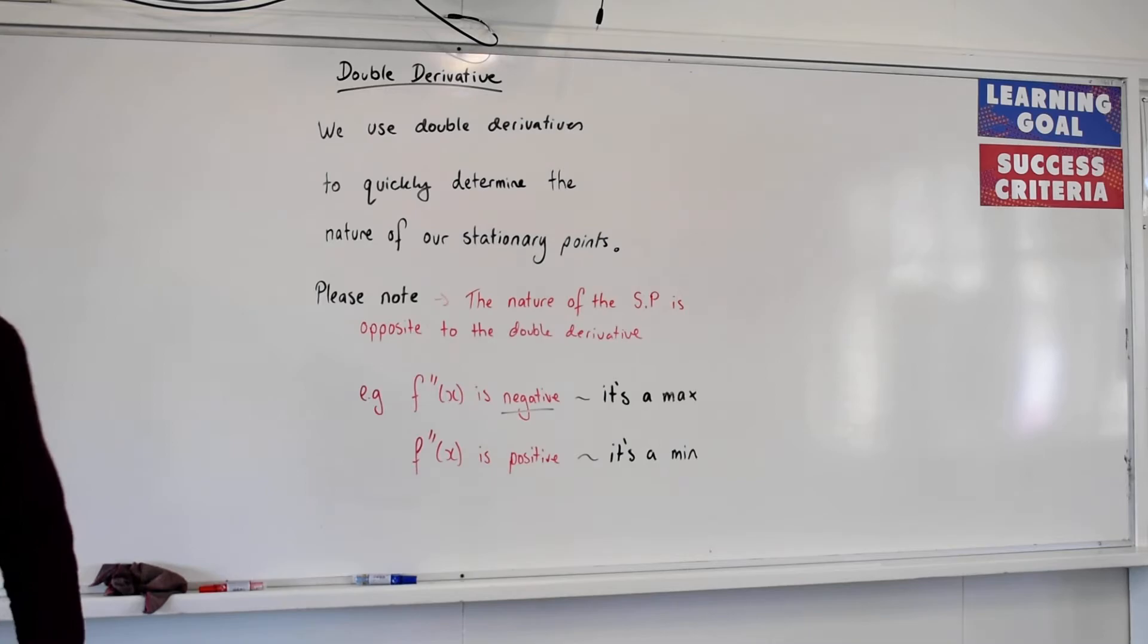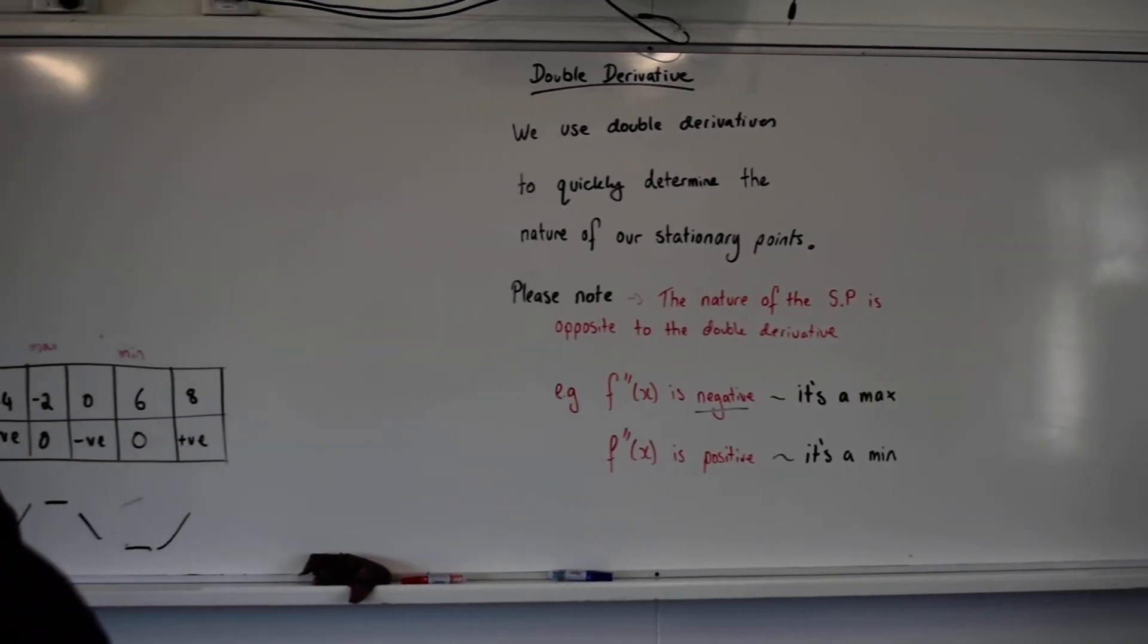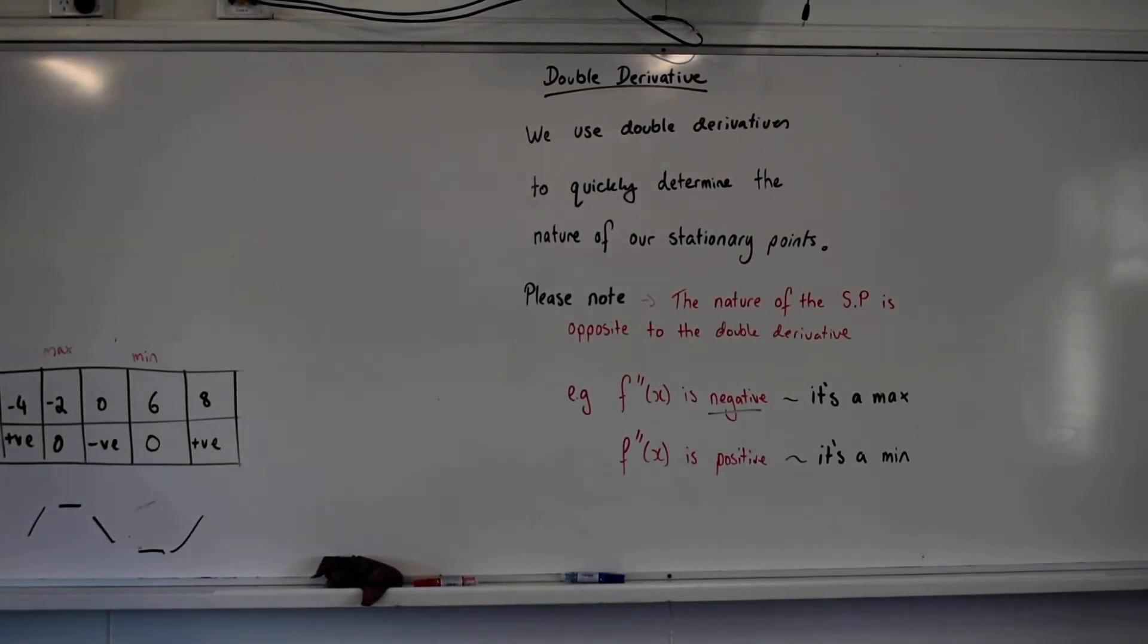And we'll talk about what happens when you get zero later on. So let's start with question one as a validation of that. Now, if we can recall question one, question one was a max or a minimum? A minimum. So we would expect that double derivative to be? Positive.